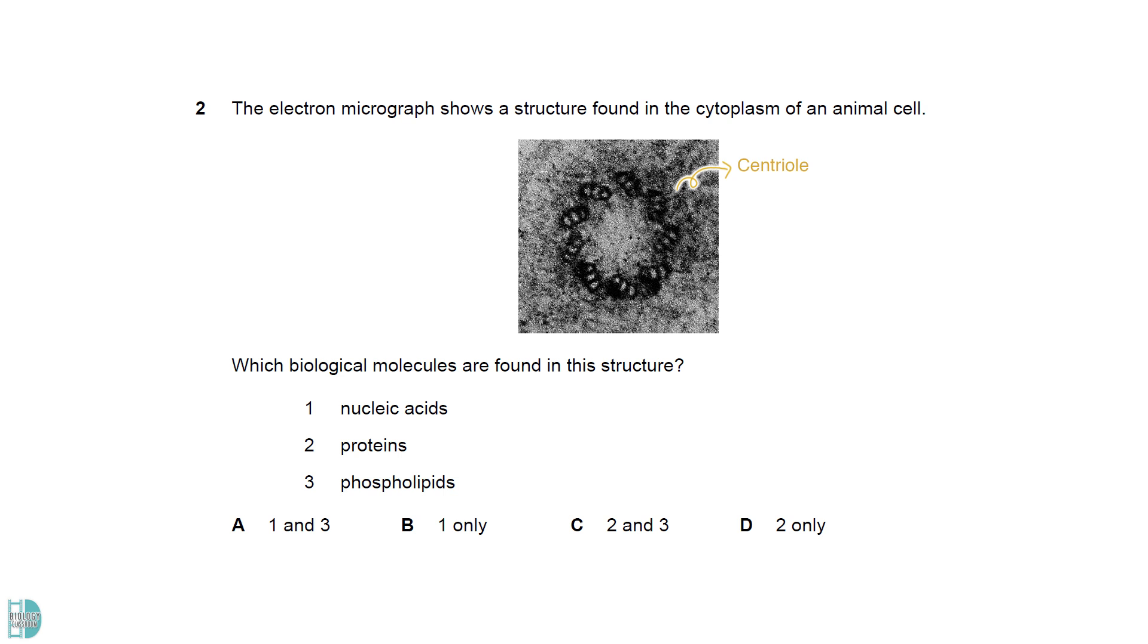This is a centriole. It is made up of 9 circularly arranged triplet microtubules. These microtubules are made up of a protein called tubulin.